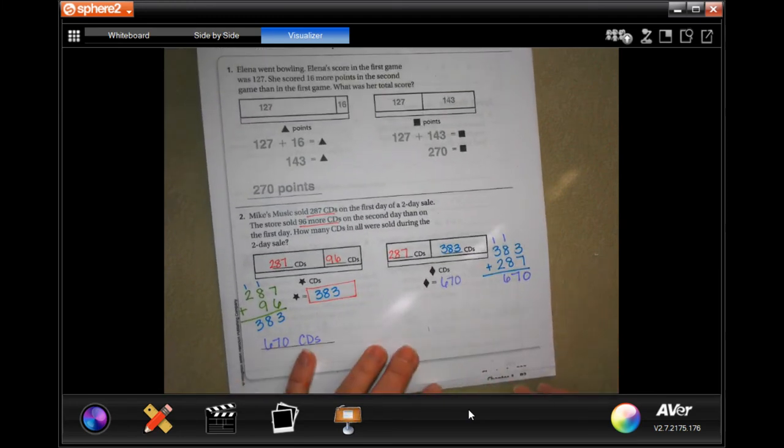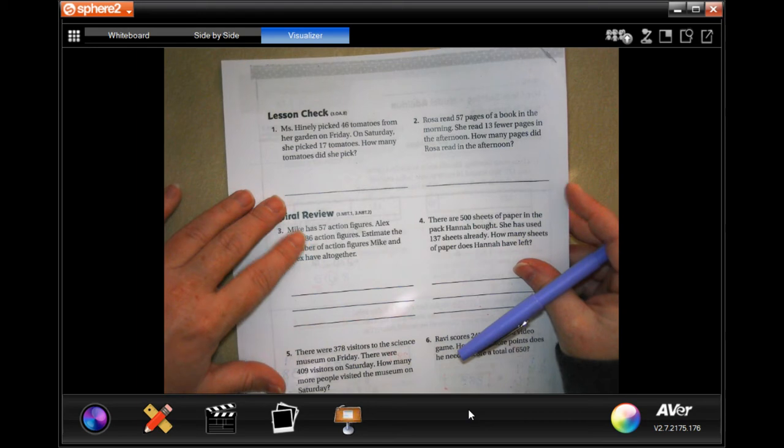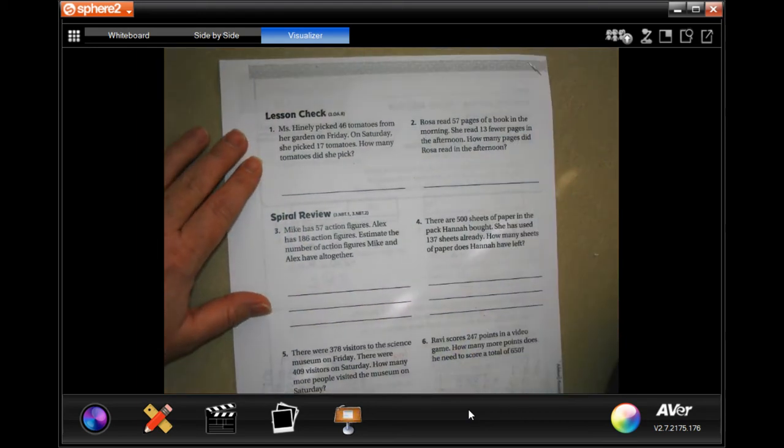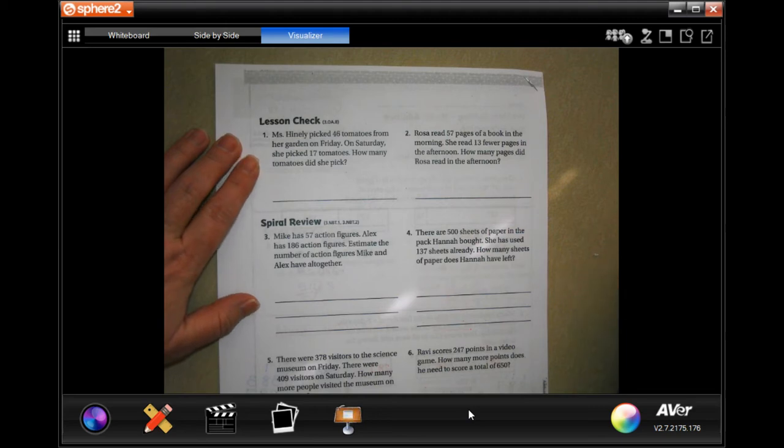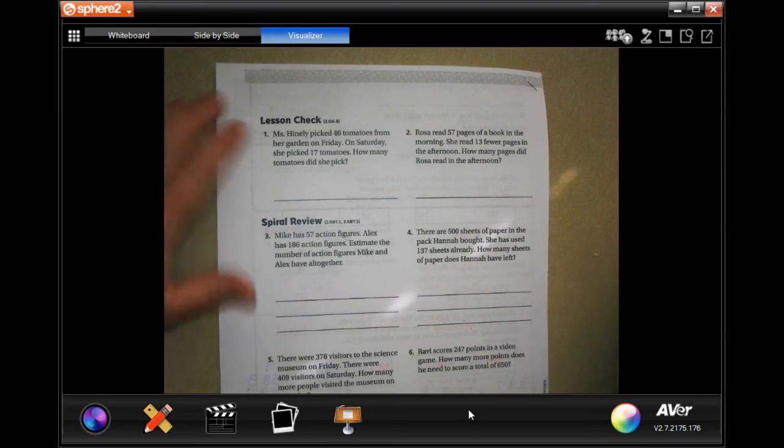We're going to go over to the back. You guys are going to do the lesson check. I'm going to see if I can help you out, though. Miss Henley picked 46 tomatoes from her garden on Friday. On Saturday, she picked 17. You're just going to add those up.